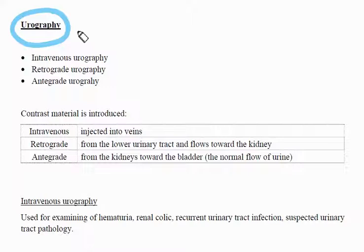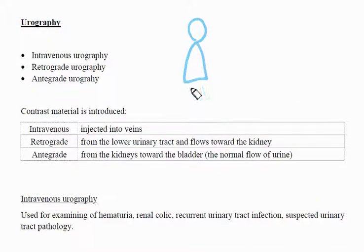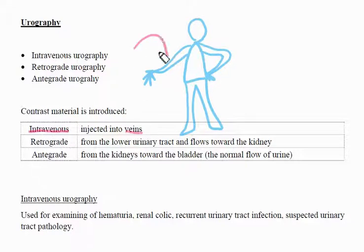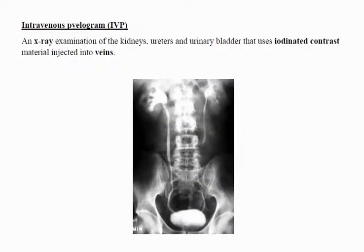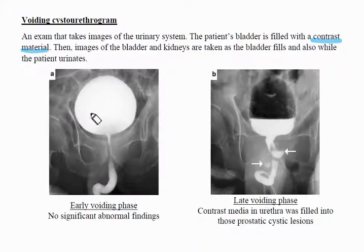There are some procedures depending on how to introduce contrast materials into the body to take pictures of the urinary system: intravenous urography, retrograde urography, and antegrade urography — also called pyelography. Intravenous means intravenously; retrograde means from the lower part of the urinary tract or downstream; and antegrade means from the kidney side or upstream. In this order, it gets more invasive. In intravenous pyelography, contrast substances are collected in the urinary system and detected in the x-ray camera as white silhouette, showing the flow of urine as time passes.